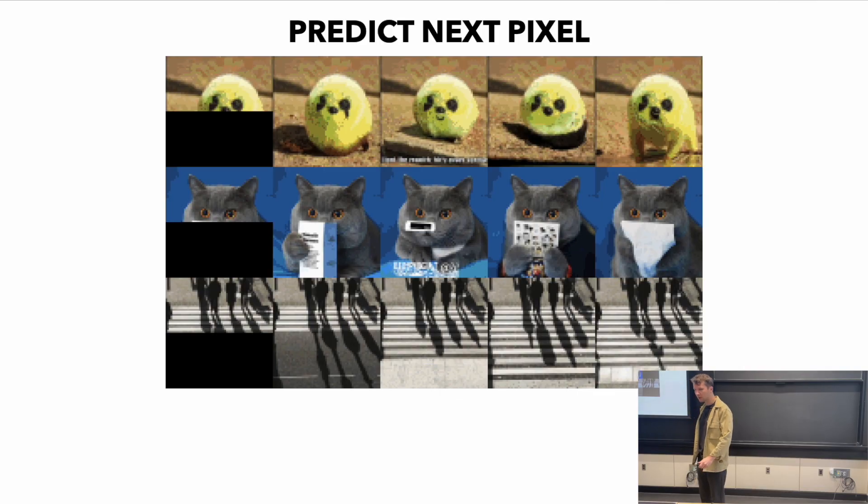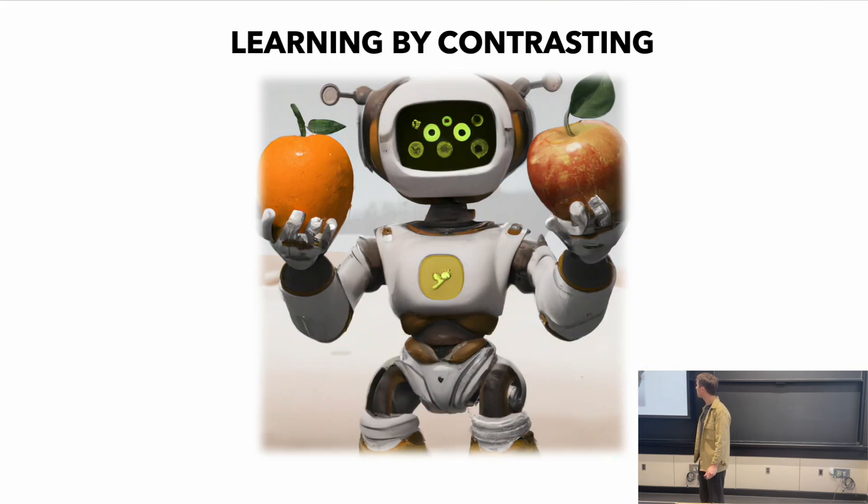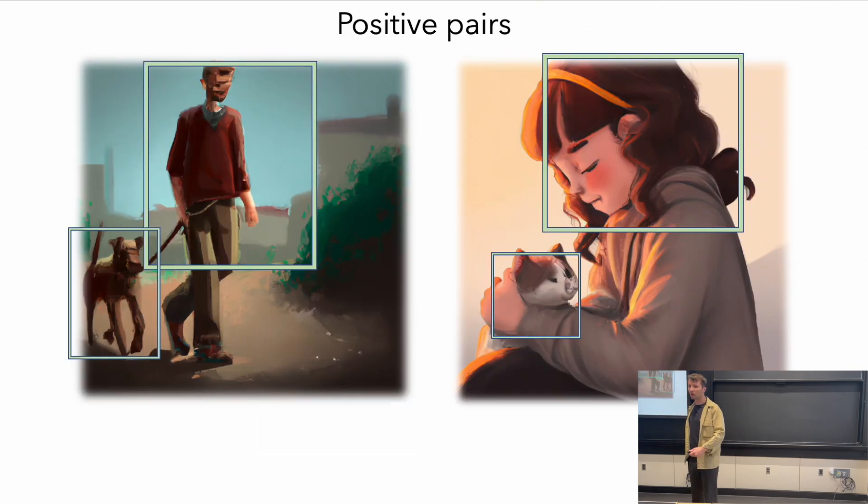Instead, what works really well in vision is learning by contrasting. This is contrastive learning, and we talked a little bit about this in the last lecture as well, but it's extremely general and powerful. One of the core components within contrastive learning is positive pairs.